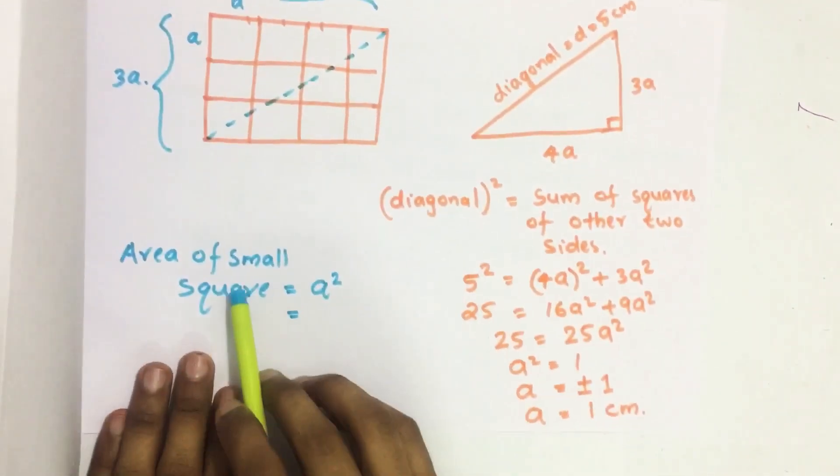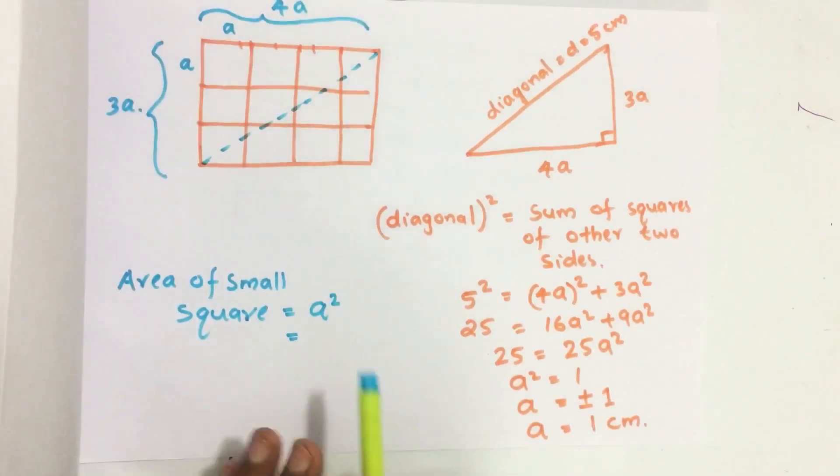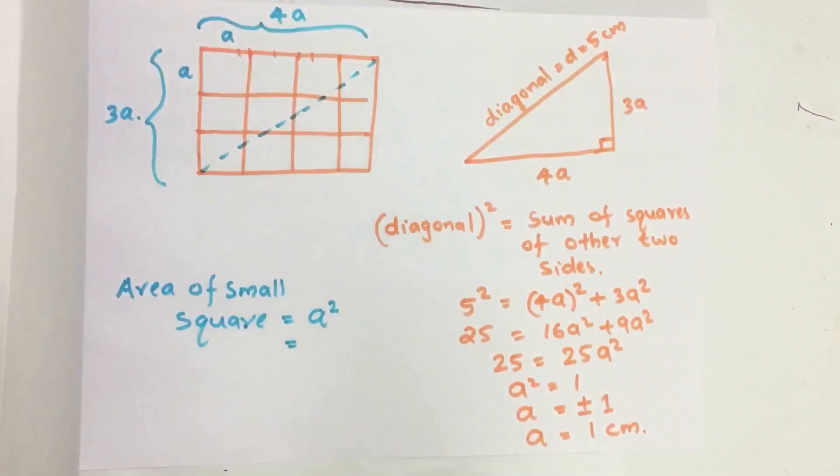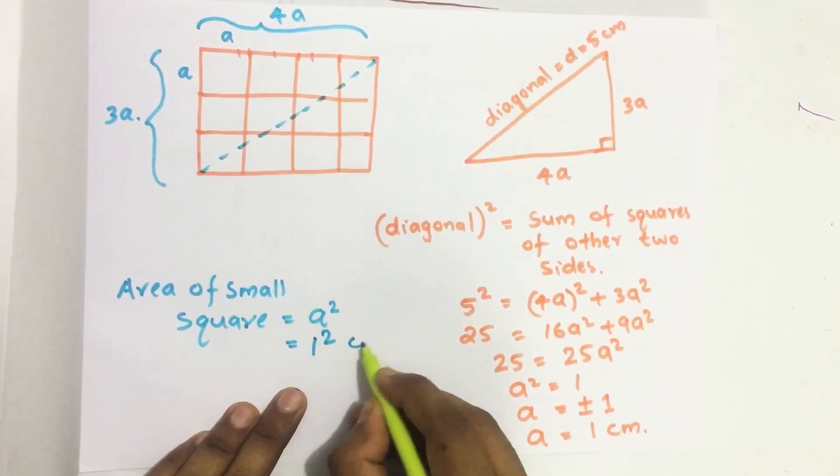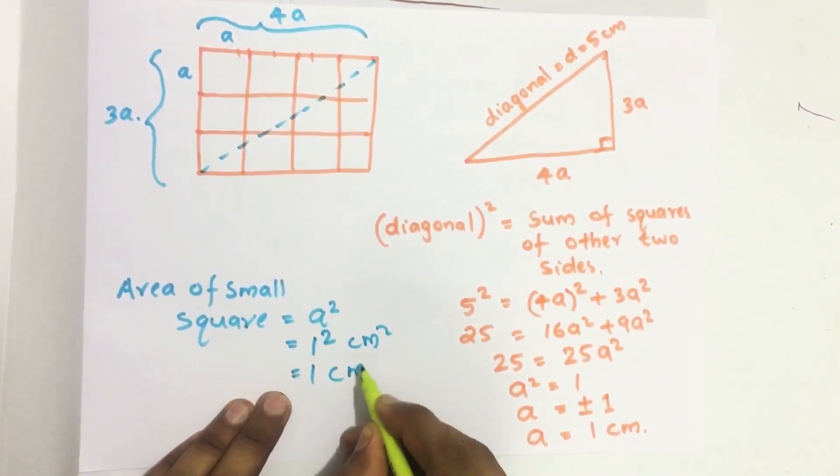Then area of the small square equals A². A equals 1, so we get 1 cm².